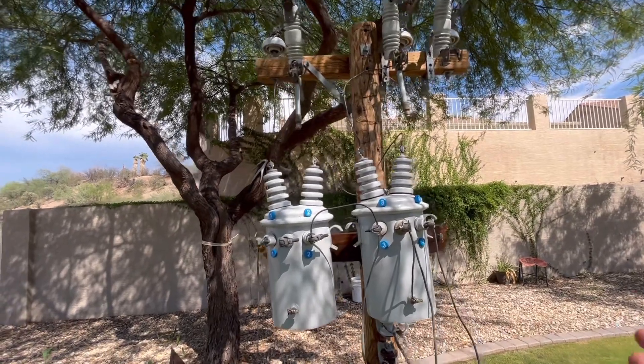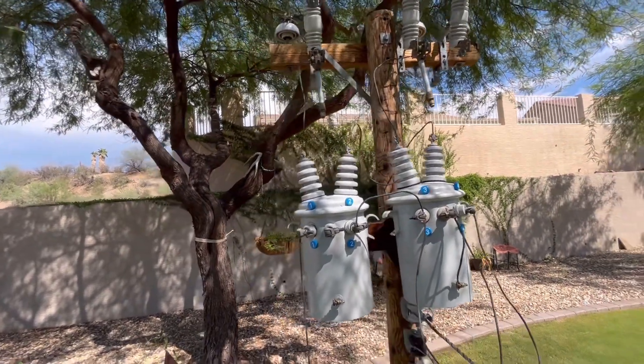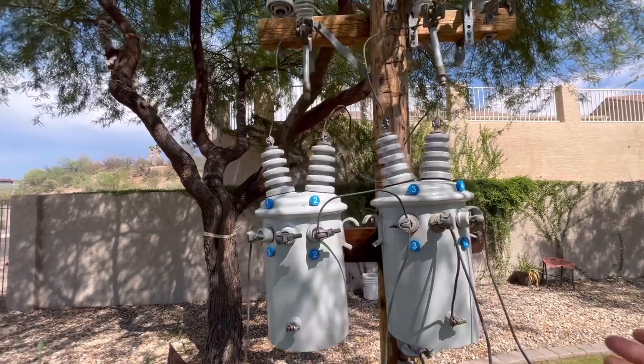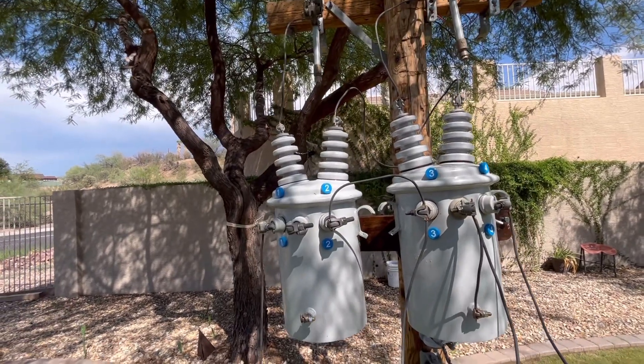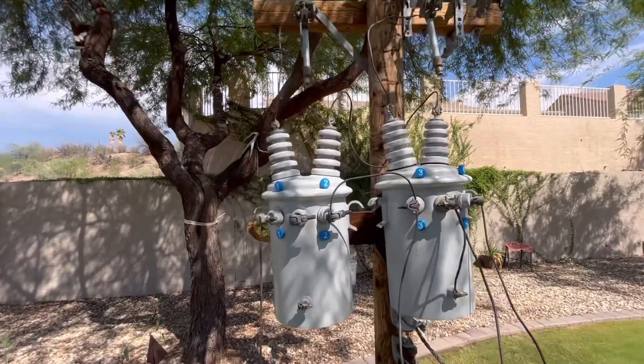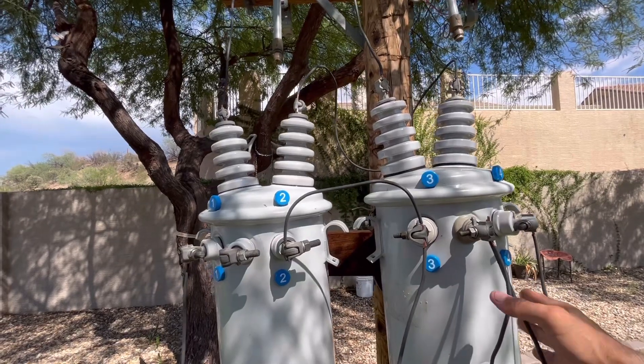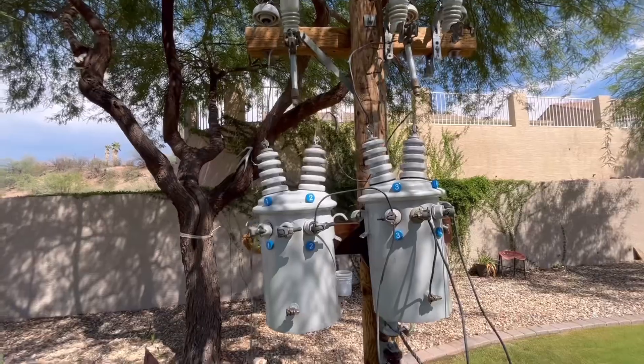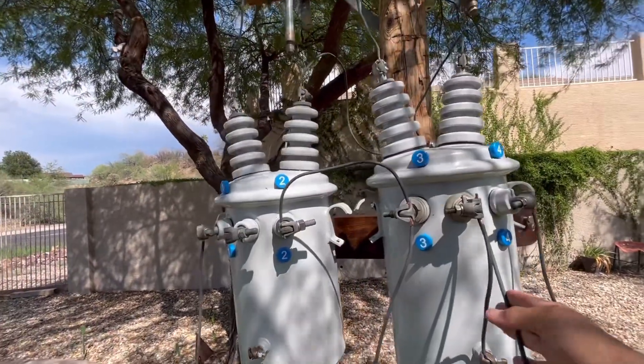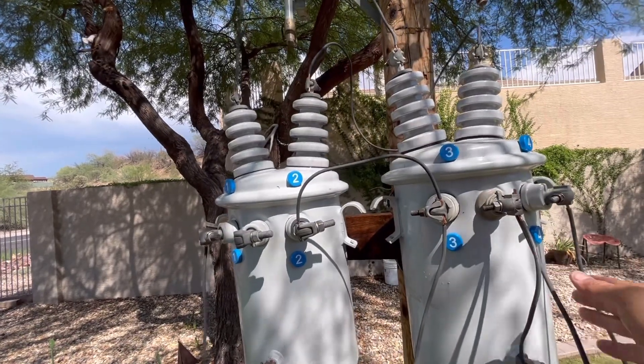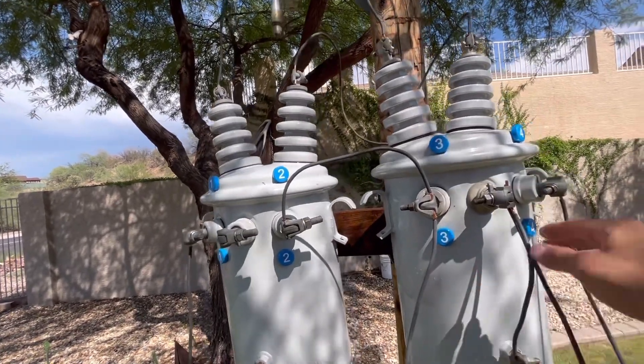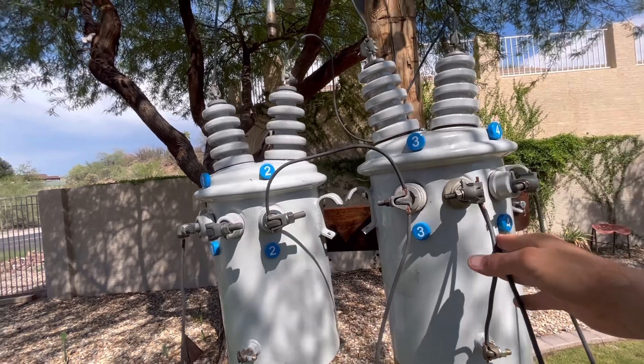So when it comes time to energize this bank, there's a certain procedure we want to go through in order to make sure that this bank is loaded in the proper way. So what you want to do is you want to energize your light pot first. In energizing the light pot first, you're going to energize and put the phase-to-neutral load, or the lighting load, on the transformer bank first.